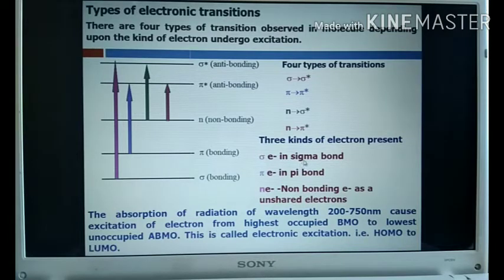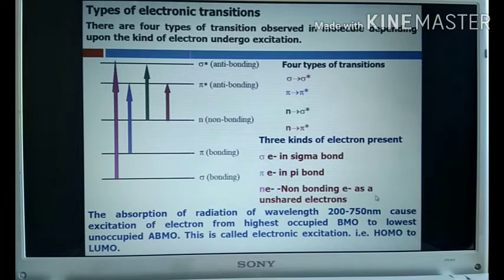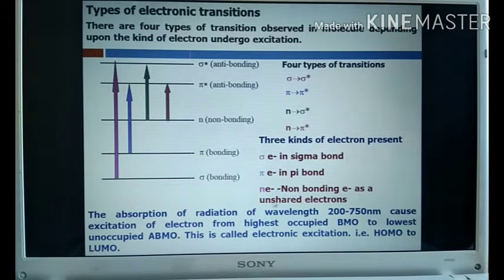The types of electrons present are: sigma electrons, found in molecules containing sigma bonds; pi electrons, found in molecules having pi bonds; and non-bonding electrons, which are always unshared electrons. Non-bonding electrons are present whenever a heteroatom such as nitrogen, oxygen, or sulfur is present in the molecule.